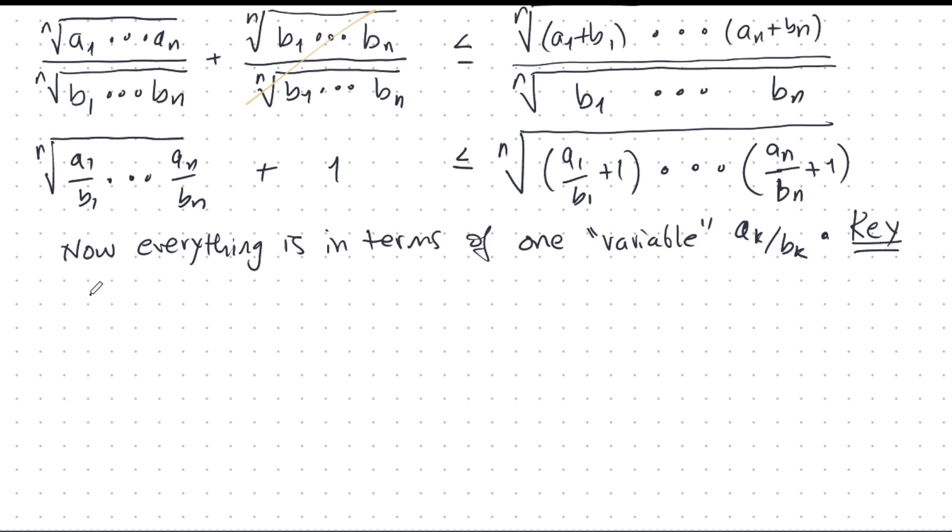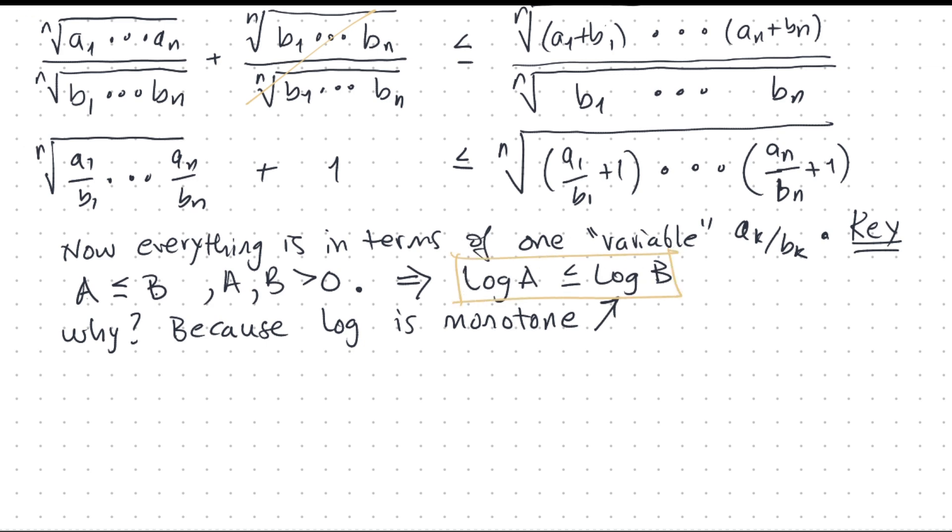Now, I can also write this, I mean really simply, I'll write it as a ≤ b. Okay, left and right hand sides. And a, both a and b are strictly positive. Okay, none of these quantities here are zero. So, in a situation where a is less than or equal to b and both are positive, I can also say that log a is less than or equal to log b. And why is that? Because log is a monotone function. It's monotone increasing. So, I can do this.